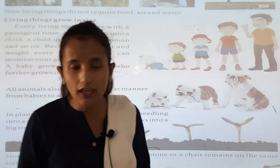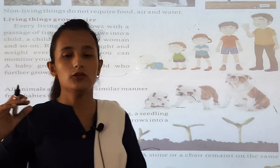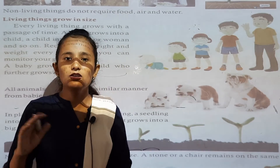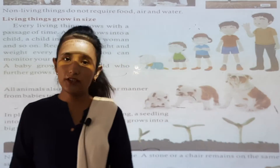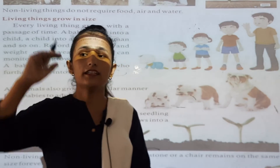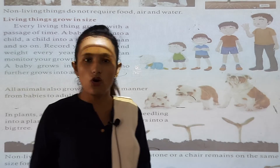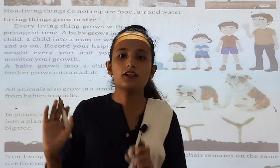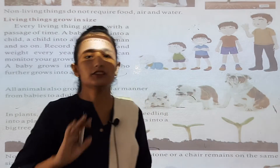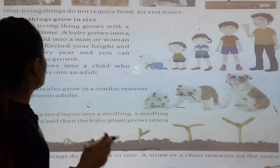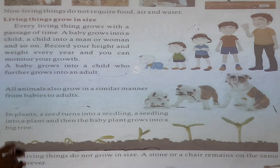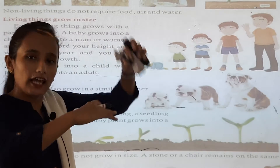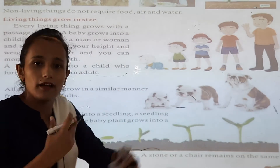You are currently in class three — you are just a baby. When you will become 18 years old, you will be an adult person. Because we are living things, our size is increasing day by day, year by year, with the help of food and water.